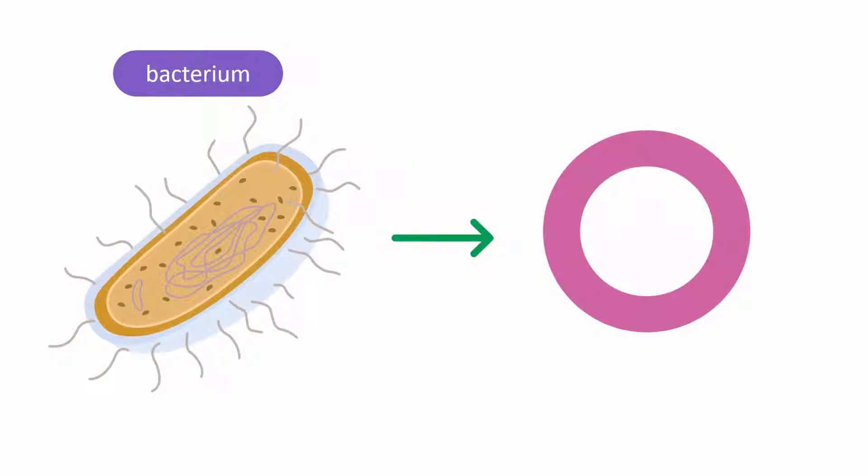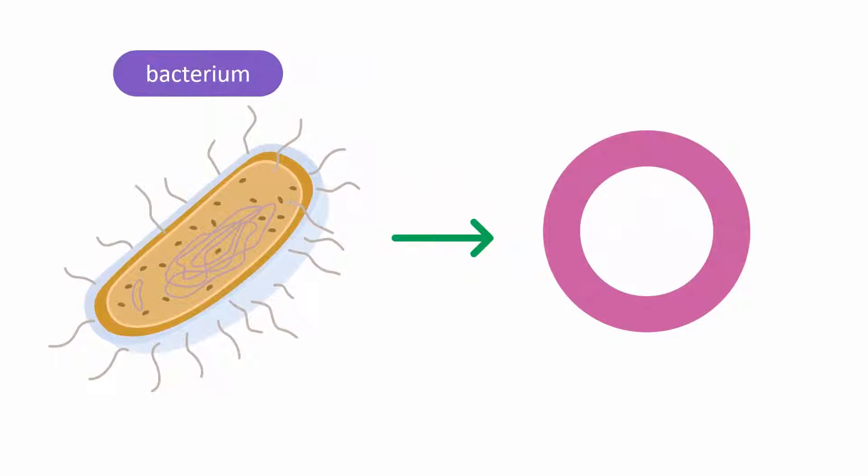First, a plasmid is isolated from the bacterium. Then, a small section is cut out of the circular plasmid by restriction enzymes, also called molecular scissors.